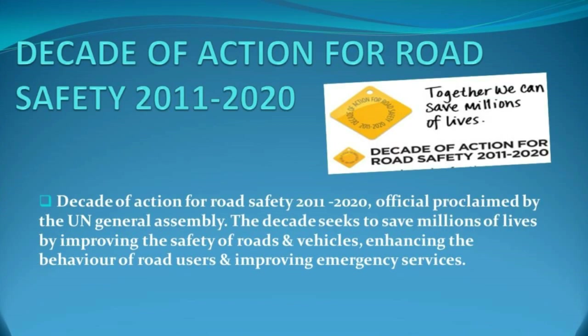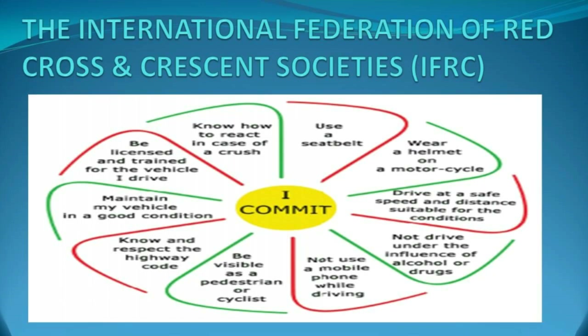Decade of Action for Road Safety 2011–2020, officially proclaimed by the UN General Assembly, seeks to save millions of lives by improving the safety of roads and vehicles, enhancing road user behaviour, and improving emergency services. The International Federation of Red Cross and Red Crescent Societies suggested 10 commitments: use a seatbelt; wear a helmet on a motorcycle; drive at a safe speed and distance; not drive under the influence of alcohol or drugs; not use a mobile phone while driving; be visible as a pedestrian or cyclist; know and respect the highway code; maintain your vehicle in good condition; be licensed and trained for the vehicle you drive; and know how to react in case of a crash.